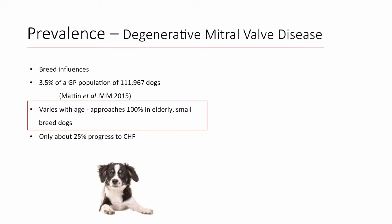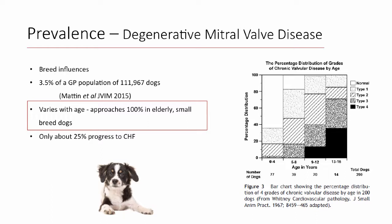It is important for us to not only identify those diseases but also decide which patients might need treatment or might have a worse prognosis. A 1967 pathology study looked at the incidence of pathologic mitral valve lesions in dogs as they got older — from zero to four years up to 13 to 16 years. As dogs approach nine or ten years of age, almost no dogs have completely normal valves. This probably should not surprise us when older dogs have mitral valve murmurs — we need to do something additional to decide if it's clinically important.